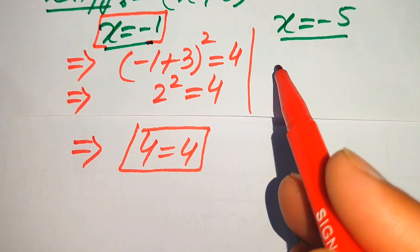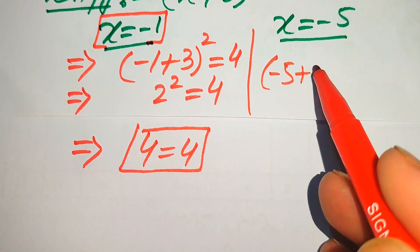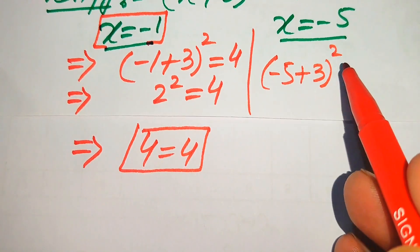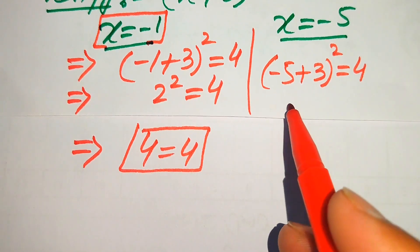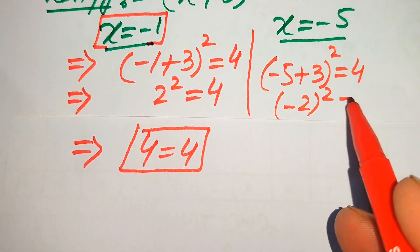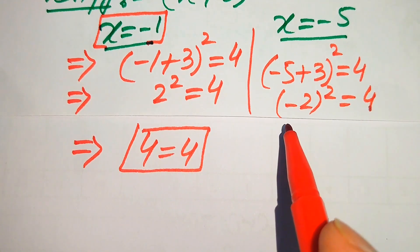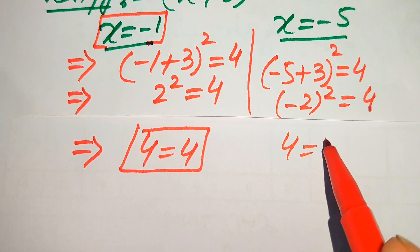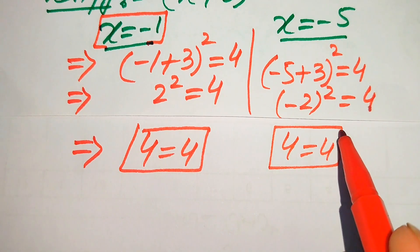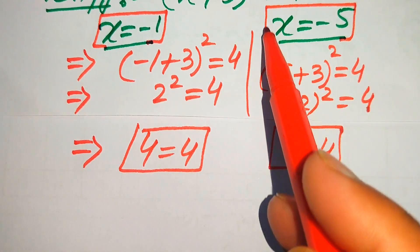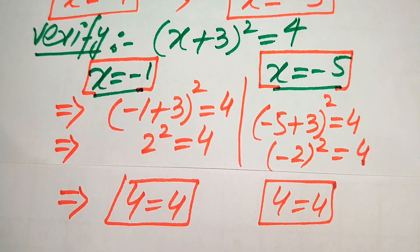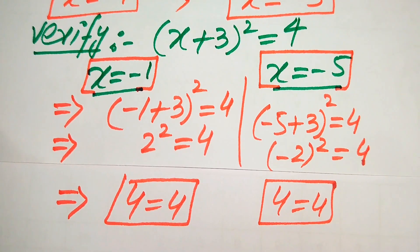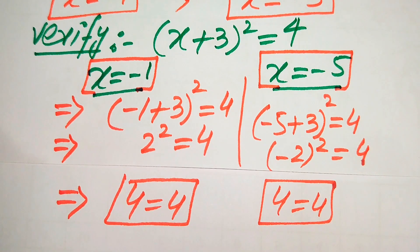To verify x = −5, we substitute: (−5 + 3)² = (−2)² = 4, and 4 = 4. This also satisfies the given equation. So both x = −1 and x = −5 are solutions of the given equation — this is our final answer. Thank you so much for watching this video; please subscribe to my channel for more exciting videos.